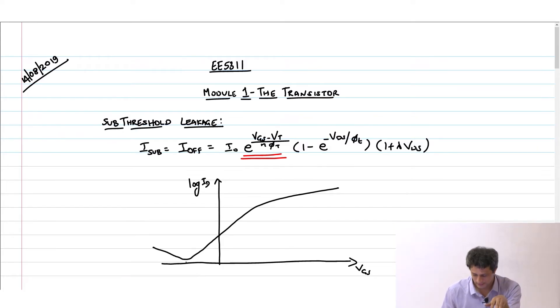At some point it will go up, and this point is because of the introduction of something called GIDL, gate induced drain leakage. You cannot indefinitely reduce V_gs to a negative value and expect that sub-threshold leakage will keep coming down. There is a point up to which you can go. Beyond that, other leakage mechanisms take over.